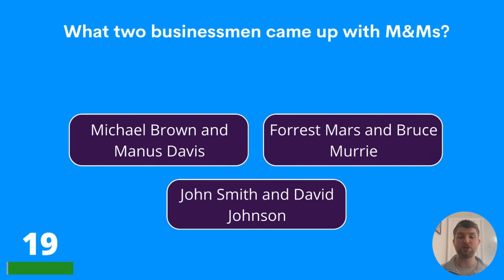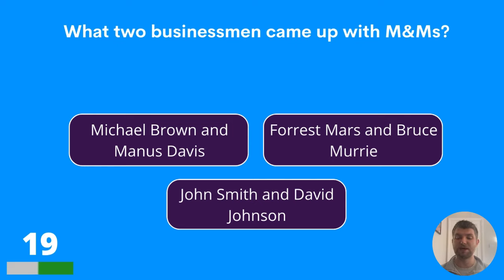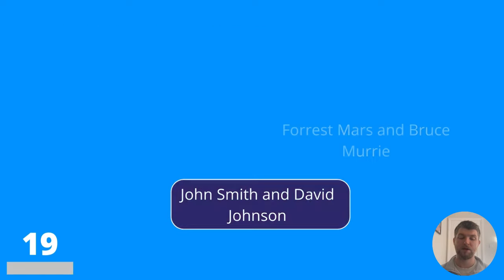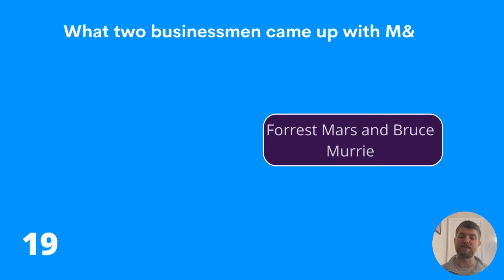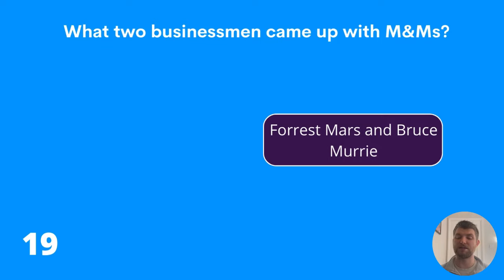Question nineteen: what two businessmen came up with M&Ms? Is it Michael Brown and Manous Davis, Forrest Mars and Bruce Murrie, or John Smith and David Johnson? The answer is Forrest Mars and Bruce Murrie.